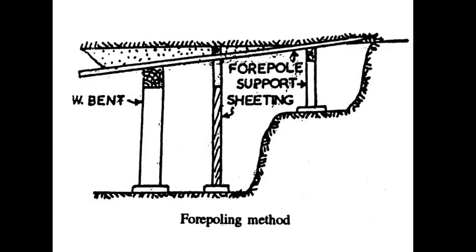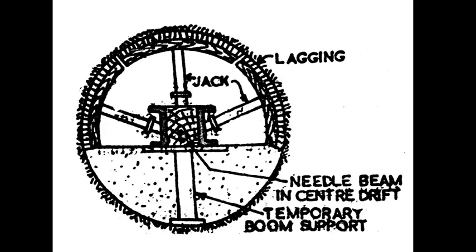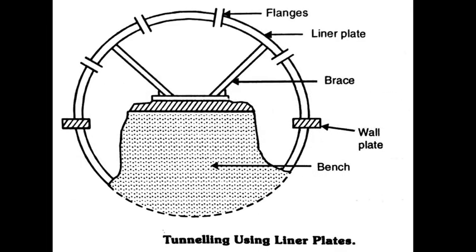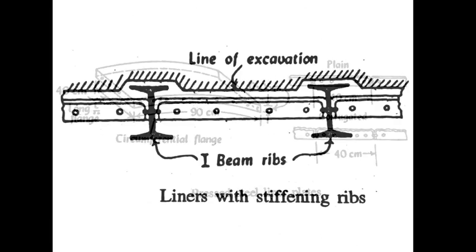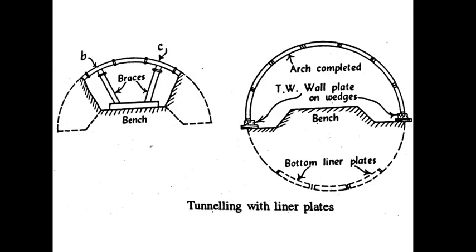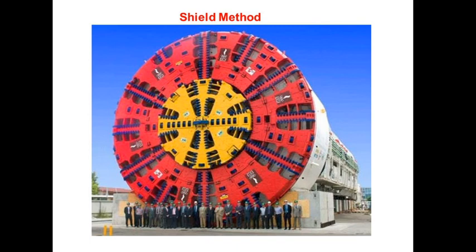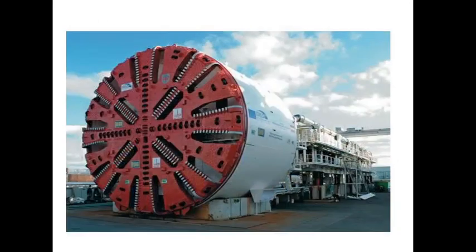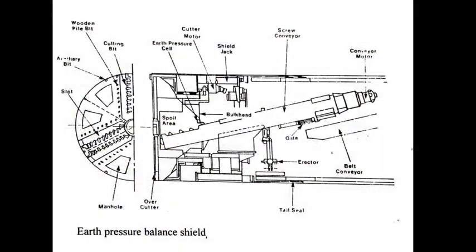Different methods are shown visually. The needle beam method uses a needle beam at the center of the drift. The liner plate method uses line plates. The shield method uses a TBM — tunnel boring machine — which is specially designed and constructed for tunneling purposes. At the front side of the TBM is the blade called the cutting head or cutting cup, which is used to excavate and fix the diameter of the tunnel.